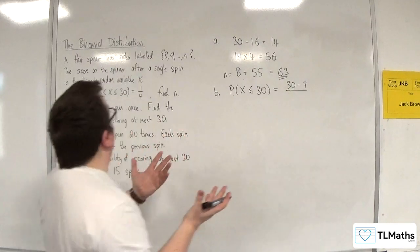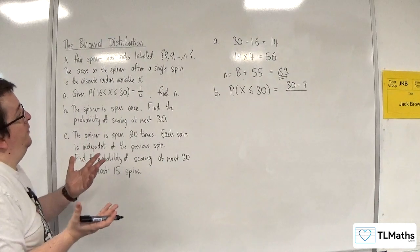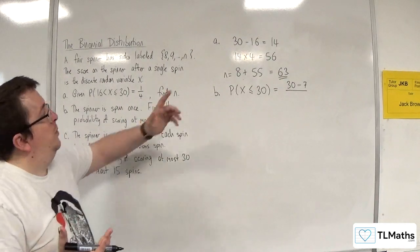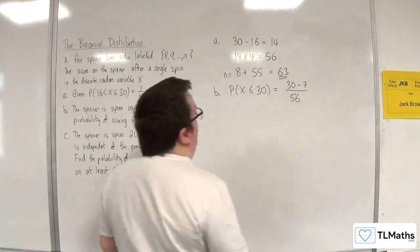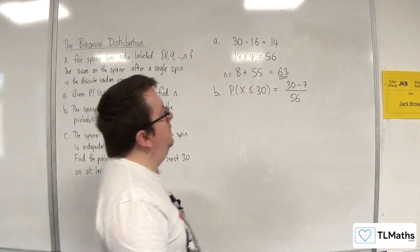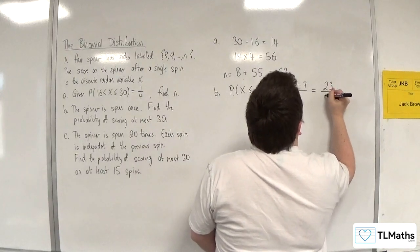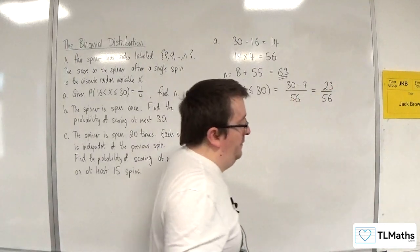And that's going to be over how many we've got, which was 56. So you've got to be a little bit careful with that, almost did it over n. So that would just be 23 over 56.